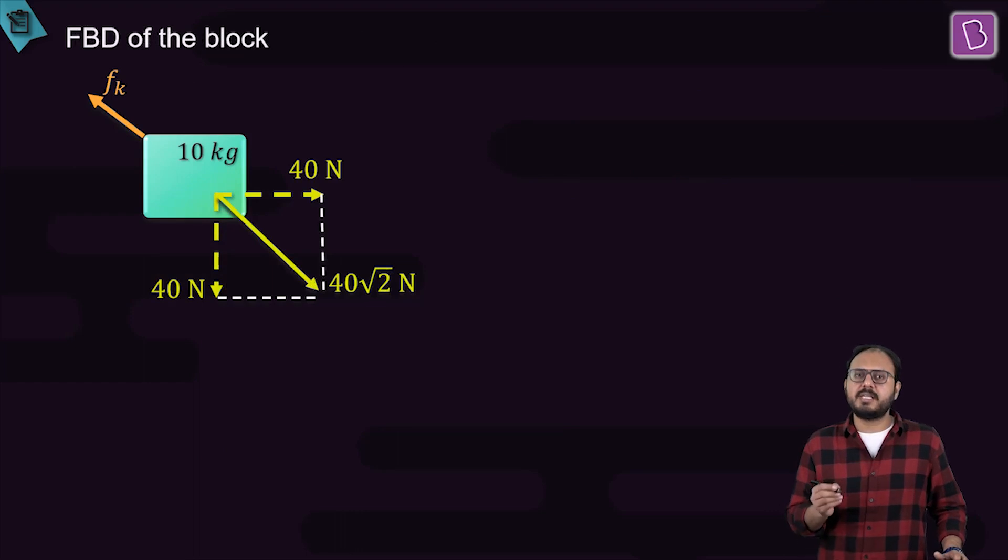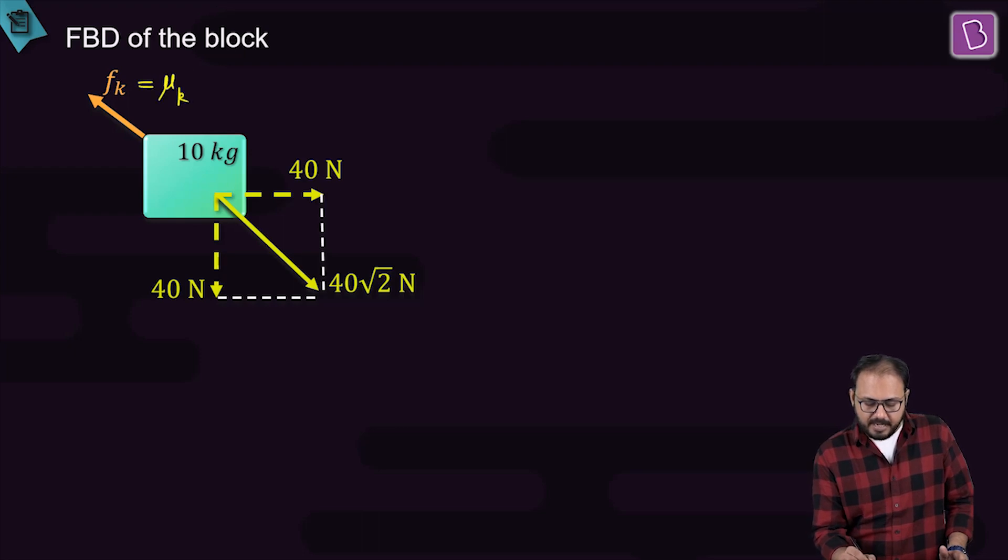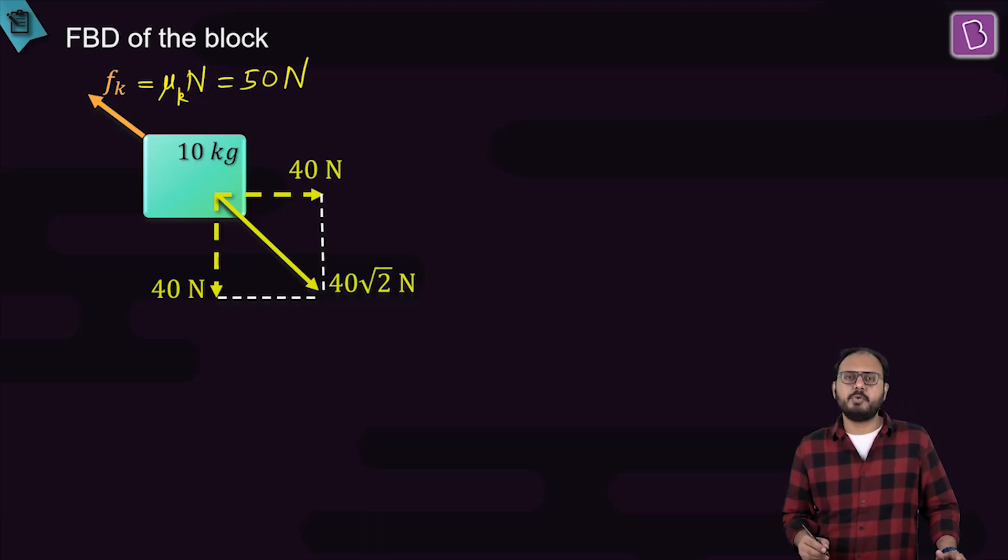10 kg block, 40 newton, 40 newton—40 root 2 newton is the net force. The fk value is mu k times N. Since mu k and mu s are both the same, it equals 50 newton.